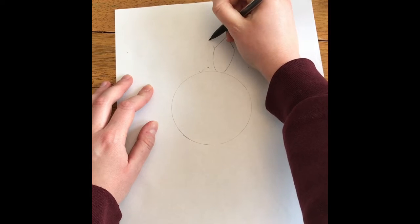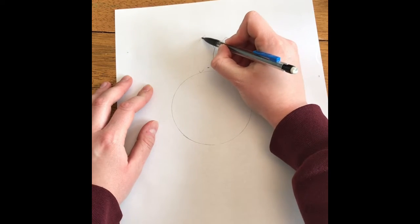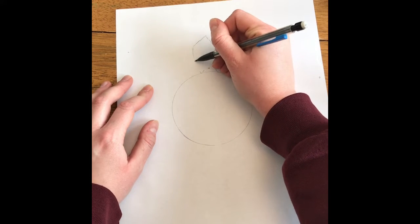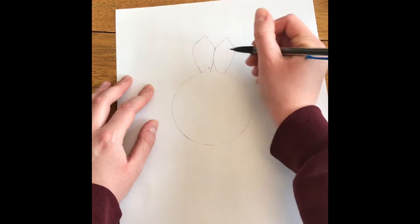Now, we want our petals to be very close together so we can fit as many as we can onto our sunflower. So the lines of your petals should either be almost touching, or they are touching.